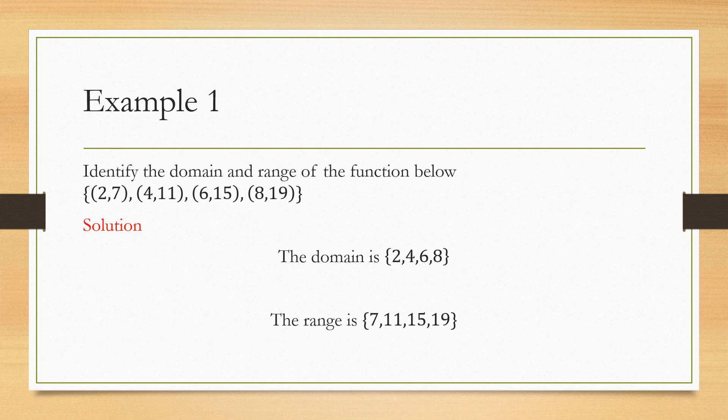Now let's discuss a few problems based on domain and range. There are several categories of how you find domain and range. Example number one: identify the domain and range of the function below. You have a set of paired elements: (2,7), (4,11), (6,15), (8,19). What is the domain? X coordinates. So the domain is {2, 4, 6, 8}. What are the y coordinates which are dependent on x? 7, 11, 15 and 19. This is a very simple problem to start with.